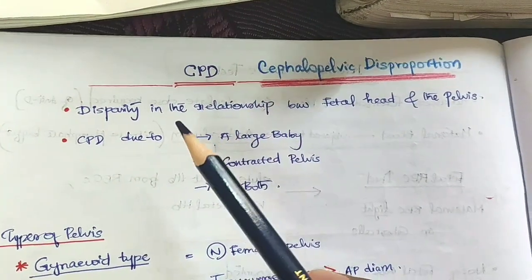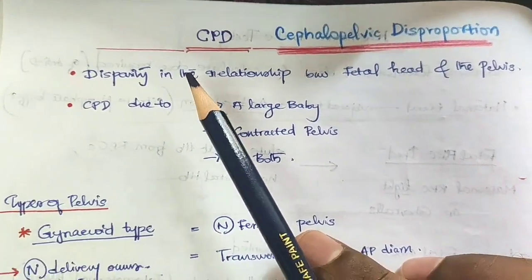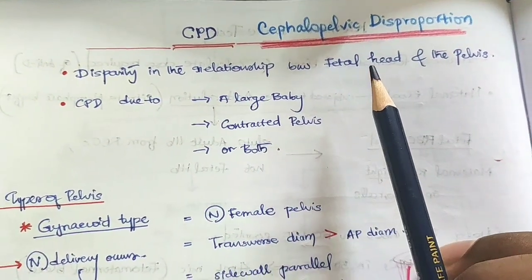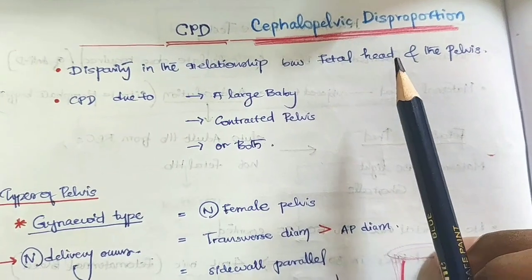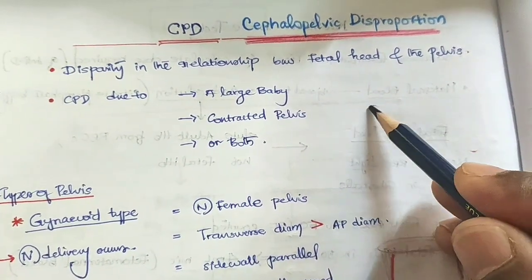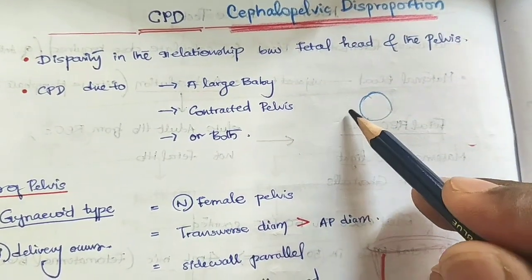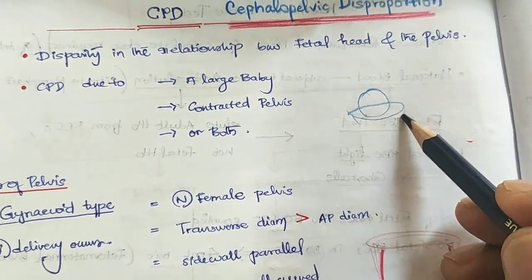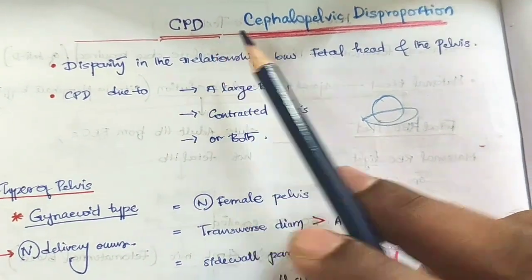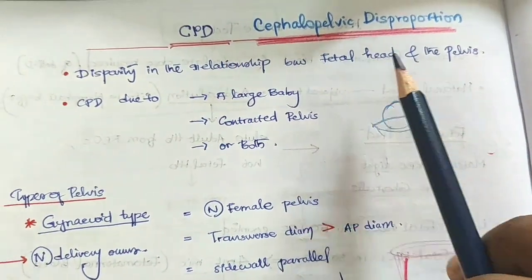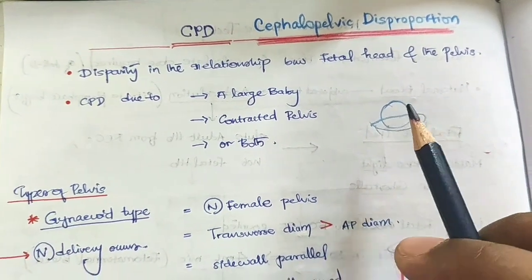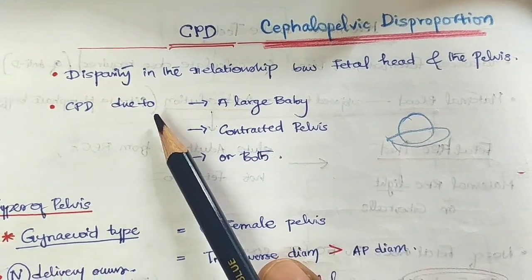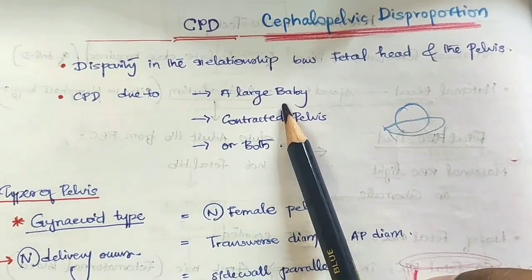The definition of CPD is the disparity in the relationship between the fetal head and the pelvis. Cephalopelvic Disproportion can be due to a large baby or a contracted pelvis.